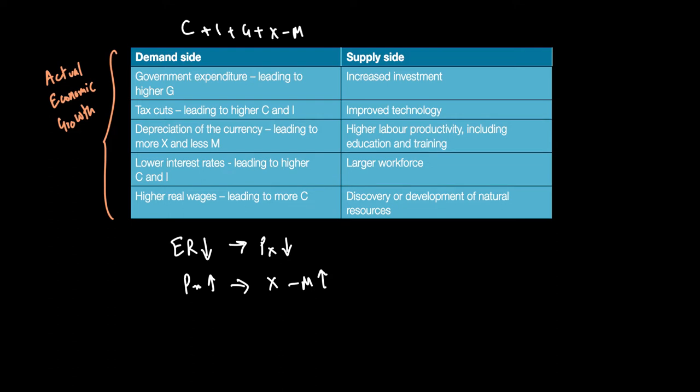Similarly, government could lower interest rates, which is basically sometimes called monetary policy, and this can result in consumption and investment going up. That's something which we'll talk about more in detail later on, but that rise in consumption and investment can cause AD to shift to the right as well.